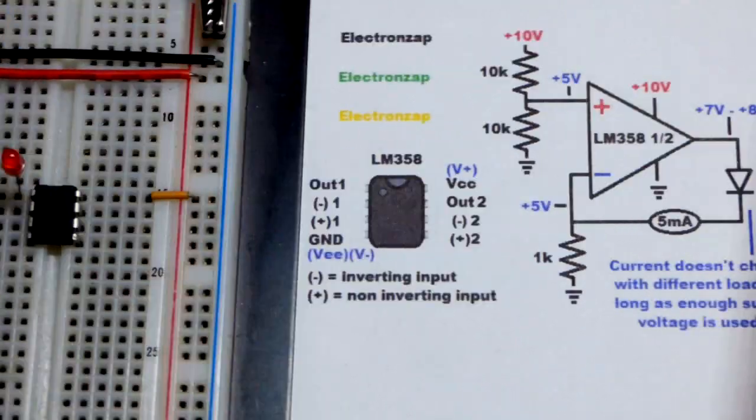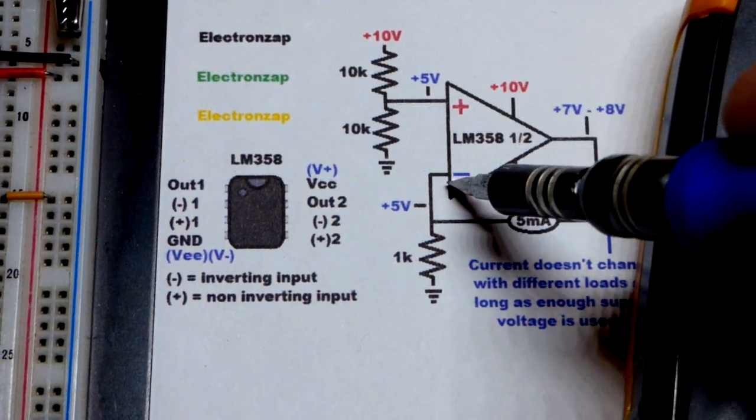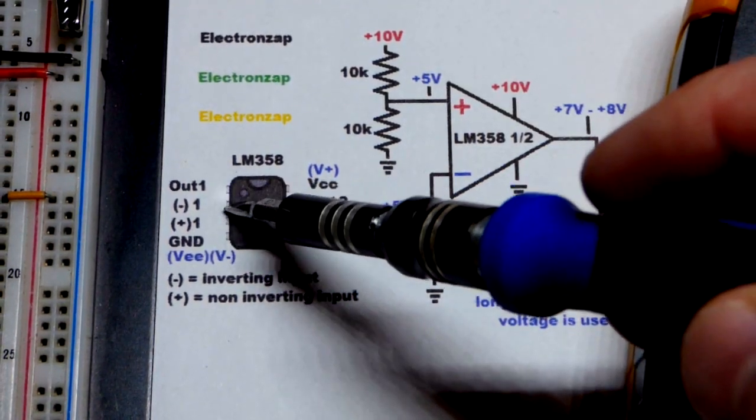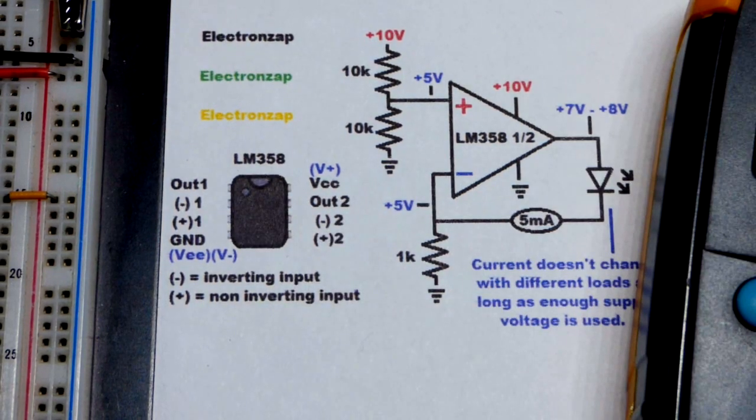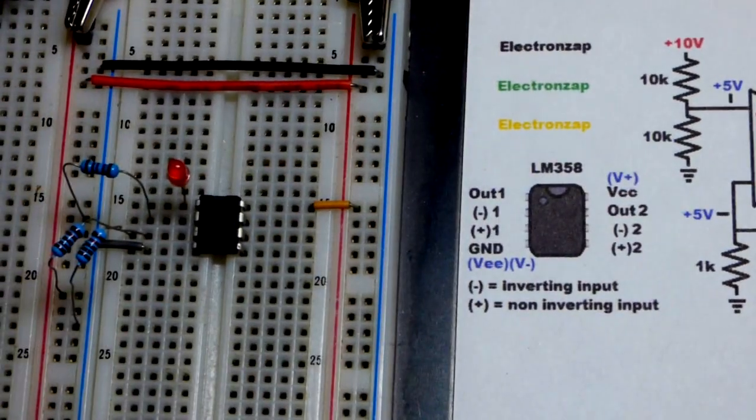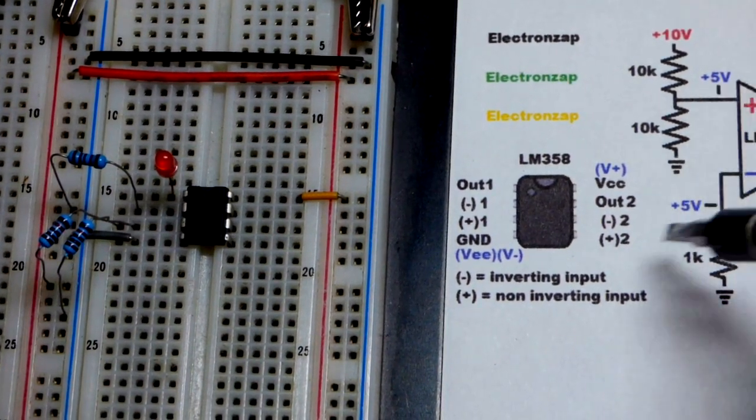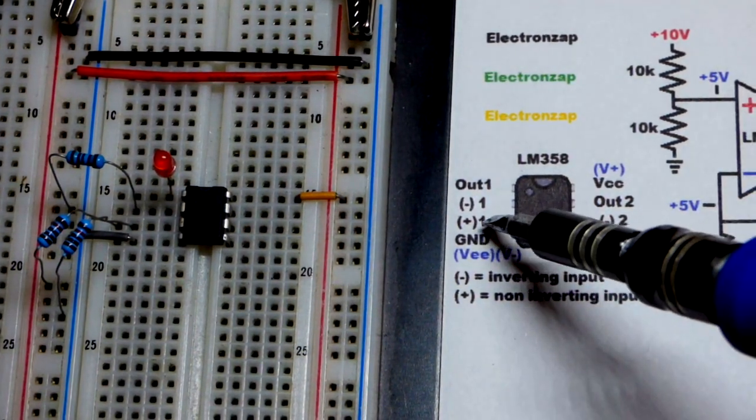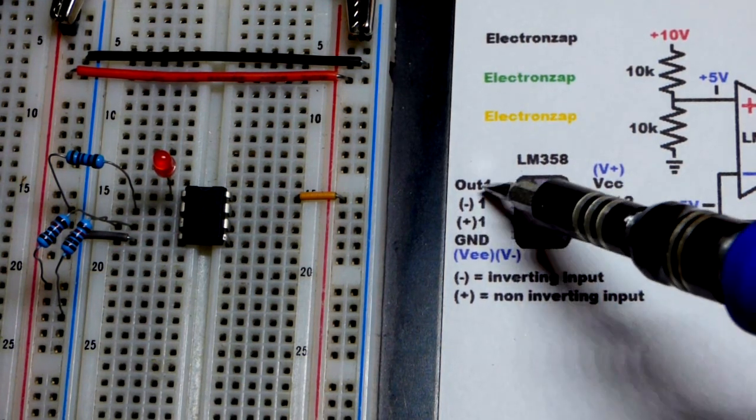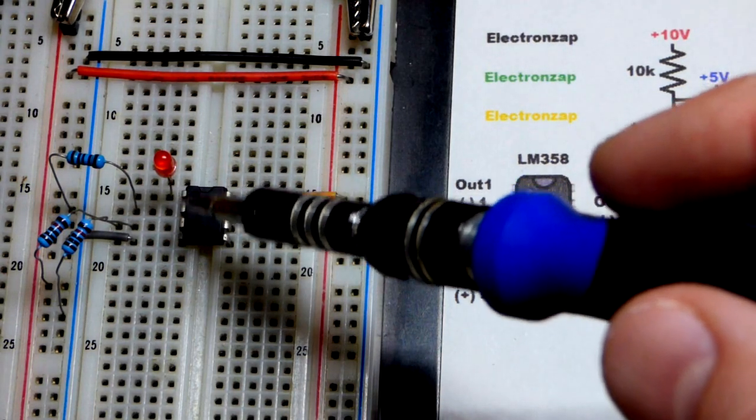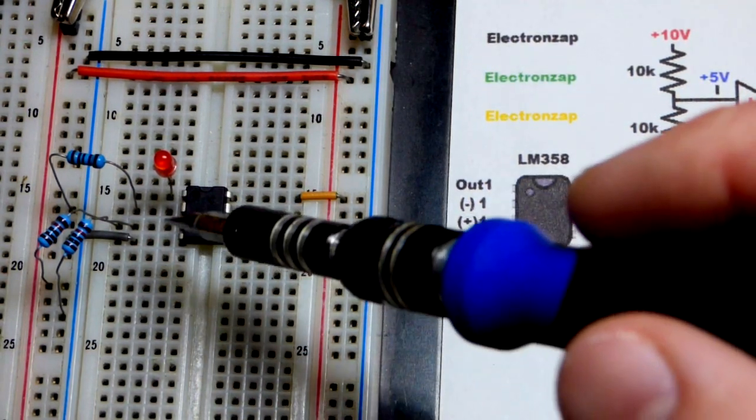And really quickly, I'm going to point out on the schematic, we have the non-inverting above the inverting, but the physical component, the inverting input is above the non-inverting input. So you've got to pay close attention to schematics with that because they will change whether the inverting or non-inverting is above or below the other one. But the physical component, they have a certain layout. And so we've got the output on the top left there, the inverting input right below it, and then the non-inverting input right below it.